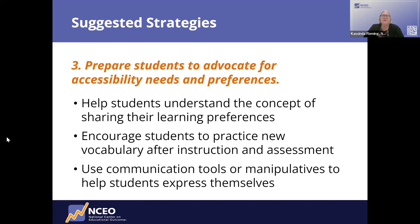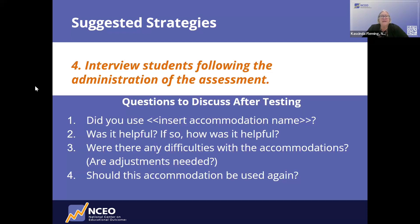Another strategy is to prepare students to advocate for their accessibility needs and preferences — not only in instruction and accommodations, but also thinking about how these advocacy skills and accommodation use will help them as they transition into college or careers. This includes practicing for IEP team meetings, role playing, and making sure they understand the vocabulary. And finally, after the assessment, have another conversation with students to find out how that testing experience was. The brief provides specific example questions you can use or adapt.